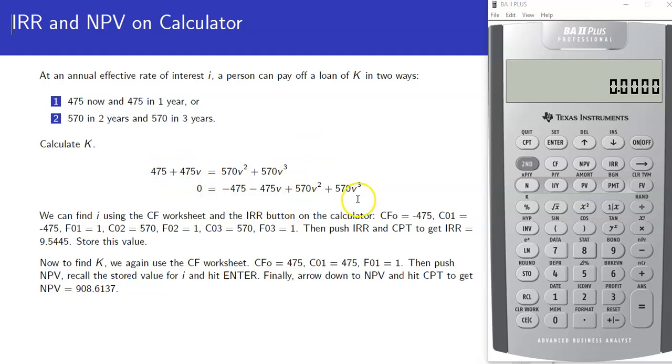We would move these cash flows over, but notice that this looks like an internal rate of return problem. We can think of this as cash flows going out, cash flows coming in, and having a present value of zero. So we can use our cash flow worksheet and the internal rate of return functionality of the calculator to figure out what the interest rate is. Let's enter the cash flow worksheet.